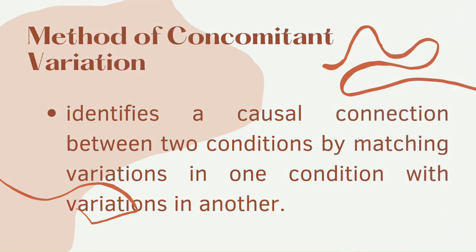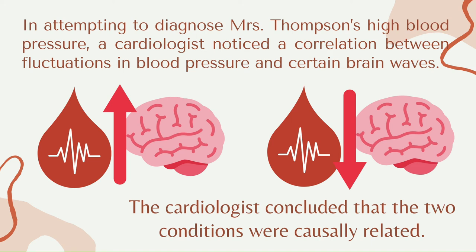The Method of Concomitant Variation identifies a causal connection between two conditions by matching variations in one condition with variations in another. For example, in attempting to diagnose Mrs. Thompson's high blood pressure, a cardiologist noticed a correlation between fluctuations in blood pressure and certain brain waves. As blood pressure increased, so did the intensity of brain waves; and as blood pressure decreased, the brain wave intensity decreased. The cardiologist concluded the two conditions were causally related — showing that one is probably the cause of the other.